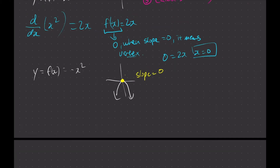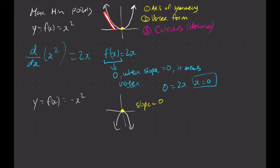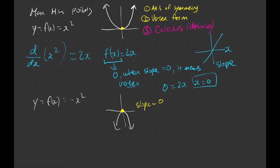That's actually very simple. We just have to look at the previous slopes. If we were to look here, when we have a negative slope, then zero slope, then positive slope, that means we're going from negative changing to positive slope — so obviously we have a minimum point. If we have a positive slope changing to zero slope and then changing to negative slope, then we obviously have a maximum point.